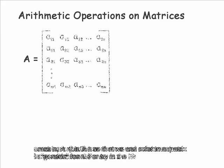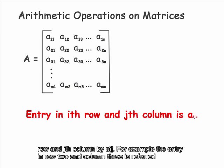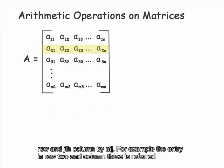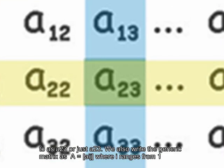For an m by n matrix A, i.e., A has m rows and n columns, we can reference the entry in the ith row and jth column by A sub ij. For example, the entry in row 2 and column 3 is referred to as A sub 23 or just A23.